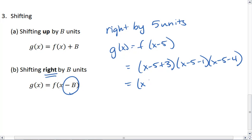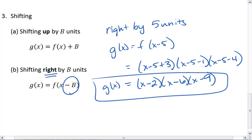We end up with x minus 2, x minus 6, and x minus 9. And so what you should realize right away is that this new function g will have 3 new roots, which we should expect since we are shifting this graph to the right.